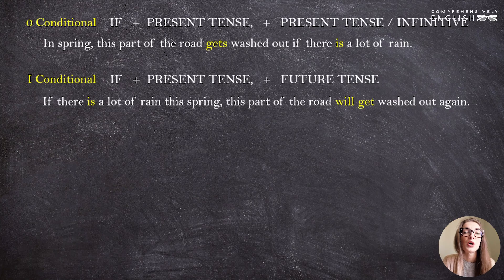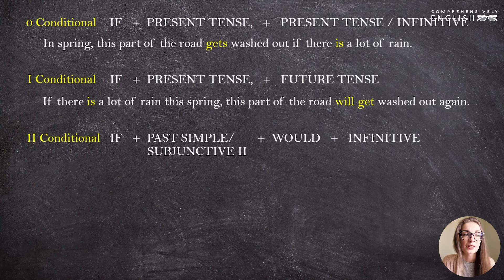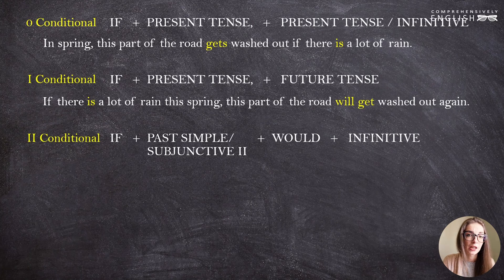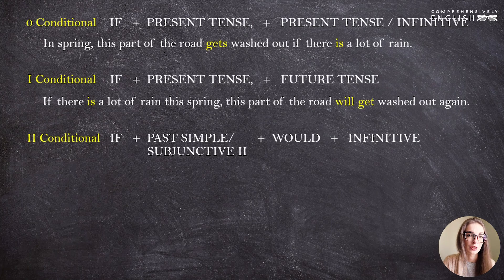The second conditional has the following formula: if plus the past simple tense or the subjunctive 'were' plus 'would' plus the infinitive. You can use the past simple or the past progressive tense if you need to show that the action is a process. For the verb 'to be,' you use the subjunctive 'were' because only the verb 'to be' has its distinct form in the subjunctive mood — 'were' for all persons: I were, you were, he were, she were, etc.